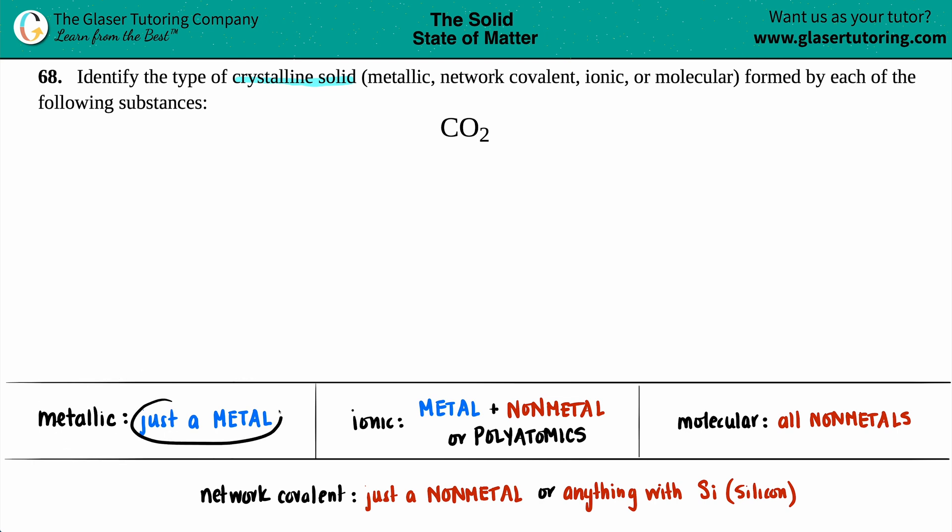...there is just a metal. The word 'metal' is in metallic, so you should just see a metal. But on the periodic table, carbon (C) is a non-metal, and oxygen is also a non-metal.